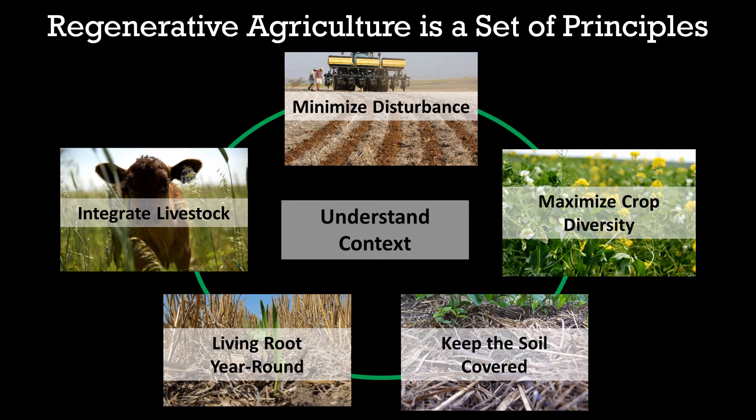Next is to keep the soil covered. There are forces like wind and rain constantly trying to erode soil and take it off the field. And hot sun can bake bare soil, evaporating out the moisture and killing the life below ground. Keeping the soil covered prevents erosion, retains moisture, and keeps the soil cool.